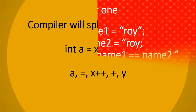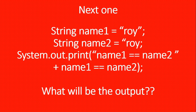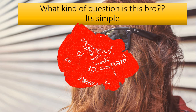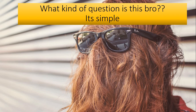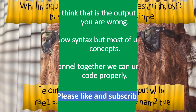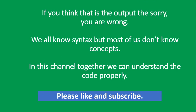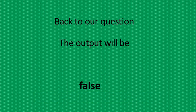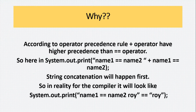Now another one: we have two strings name1 and name2, both with the same value 'Roy'. I am printing whether name1 and name2 are the same using: System.out.print(name1 == name2 + name1 == name2). You might think the output will be 'true', but if you think that is the right answer, you are wrong — the output will simply be false.